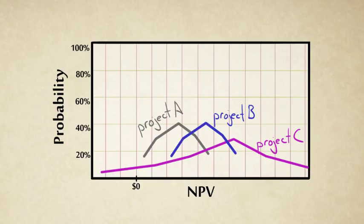But project C has a higher net present value than B, only with more risk involved. There's a chance of the net present value being greater, but there's also a chance of it being less. There's no longer a clear cut decision here.